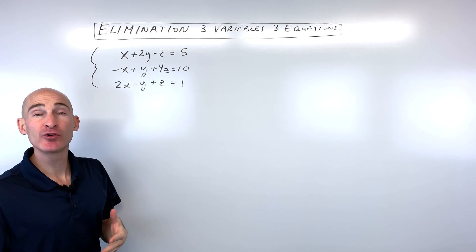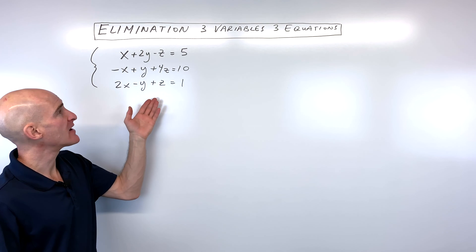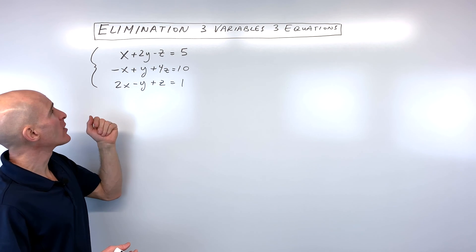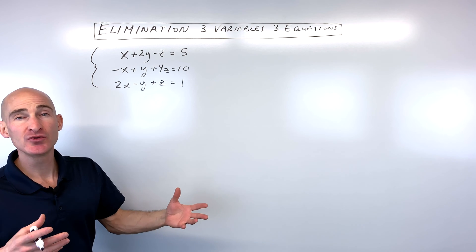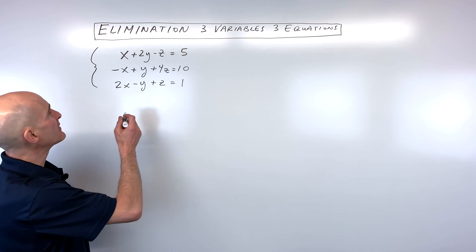First thing you want to decide is what variable do you want to eliminate. Do you want to eliminate the x's, the y's, or the z's? Well, what we're going to do is just pick one of the variables. It doesn't matter which one you pick. Sometimes one is easier to eliminate than another. And what we're going to do is eliminate the x's.